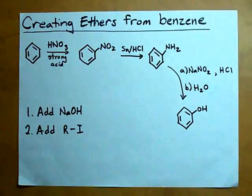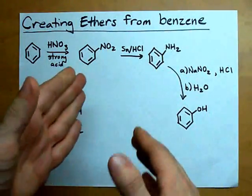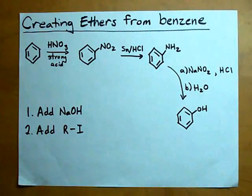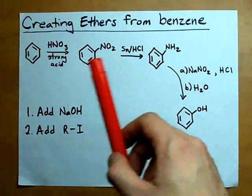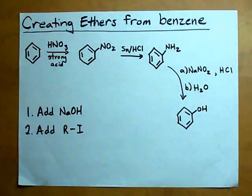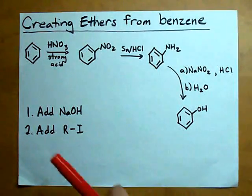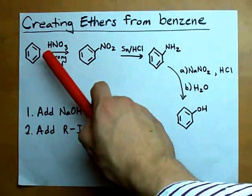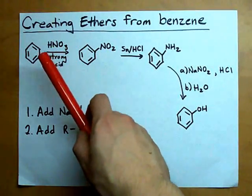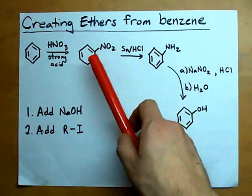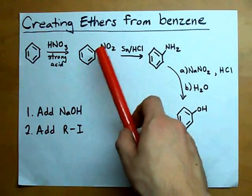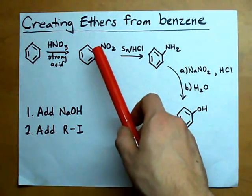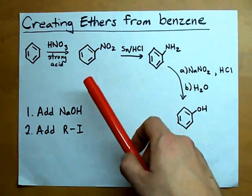I know you've all been wondering how you can create a phenyl ether out of a benzene ring. The answer is it's a little bit of a contrived synthesis, but I'm going to show you anyways. If you start with benzene and you treat it with HNO3, or nitric acid, you can actually add an NO2 to it. So here we have nitrobenzene.